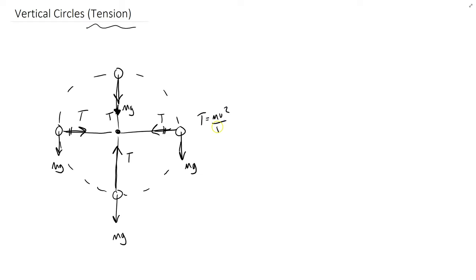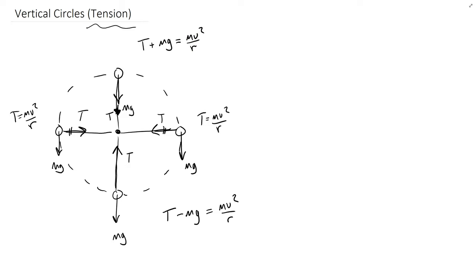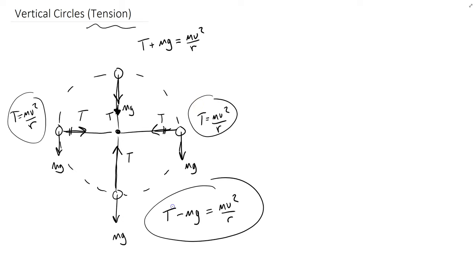Let's write equations for centripetal force at each location. On the sides, tension is the entire centripetal force, so T = mv²/r. At the bottom, tension is positive and mg is negative (pointing away from center), so T − mg = mv²/r. At the top, both tension and weight point toward the center, so T + mg = mv²/r.